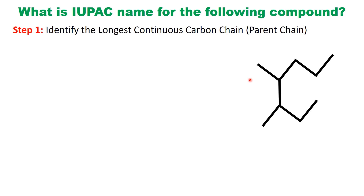First, let's identify the longest continuous chain of carbon atoms in the molecule. This chain will give us the parent name. Remember, it doesn't matter if the chain is straight or has bends — it's the length that counts.